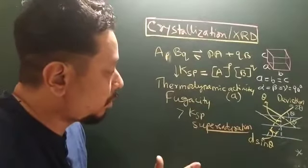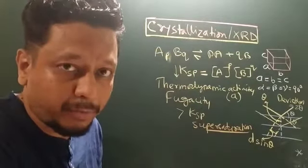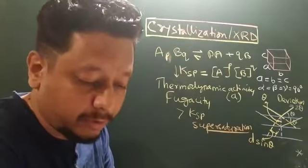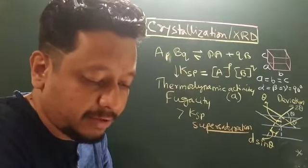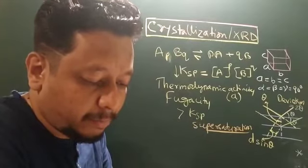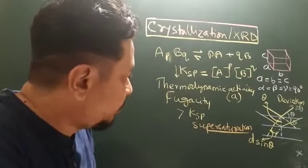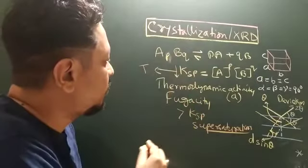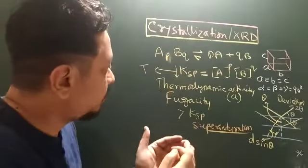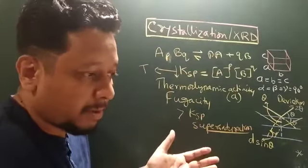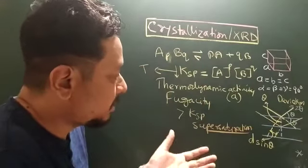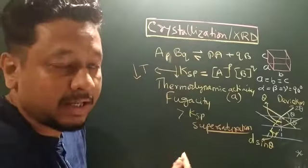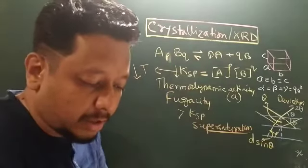What is supersaturation? When the concentration of the product exceeds the amount of solubility product. Supersaturation can be achieved at higher temperature. The Ksp depends upon temperature. If you increase the temperature, Ksp increases. But the moment it reaches supersaturation, if you decrease the temperature, Ksp also decreases.